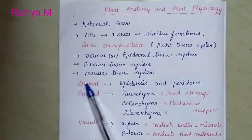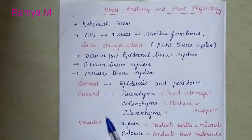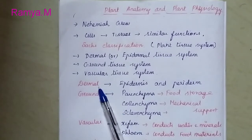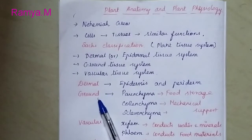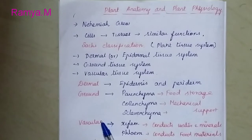These are the three different tissue systems. The dermal tissue system is present on the outside of the plant part, the ground tissue system is present in the middle, and the vascular tissue system is the inner part.